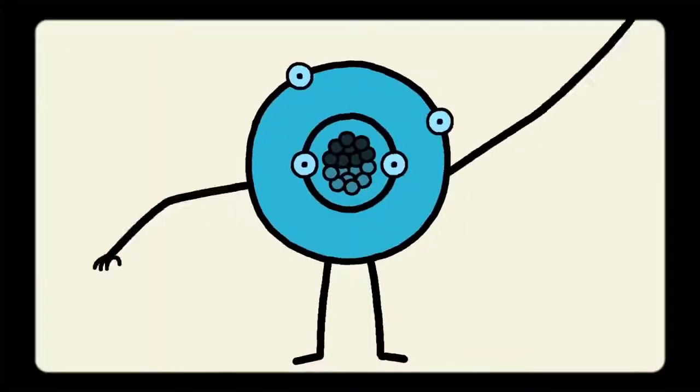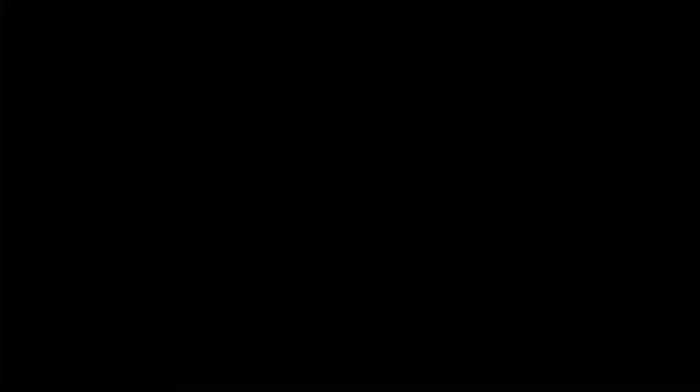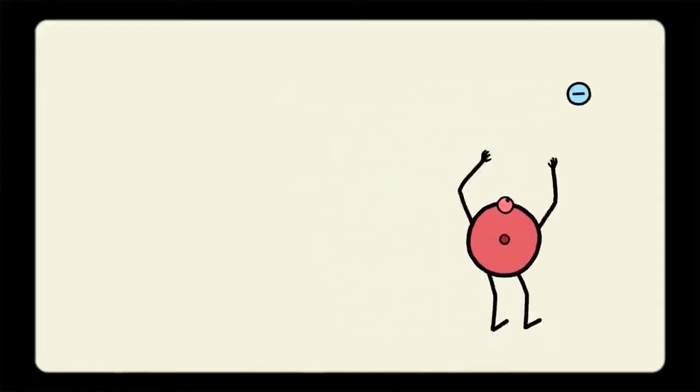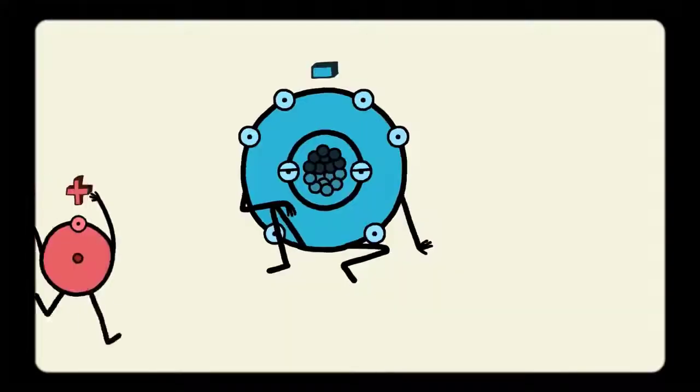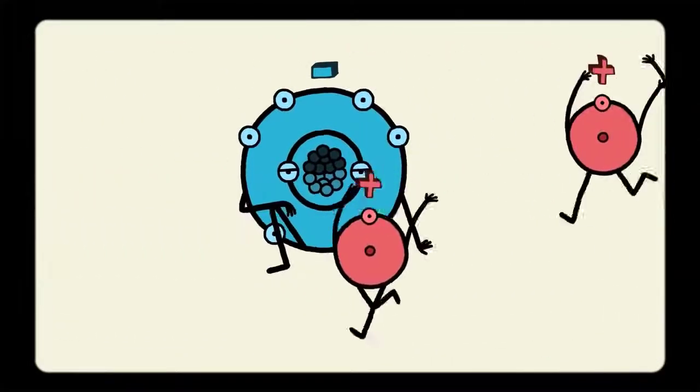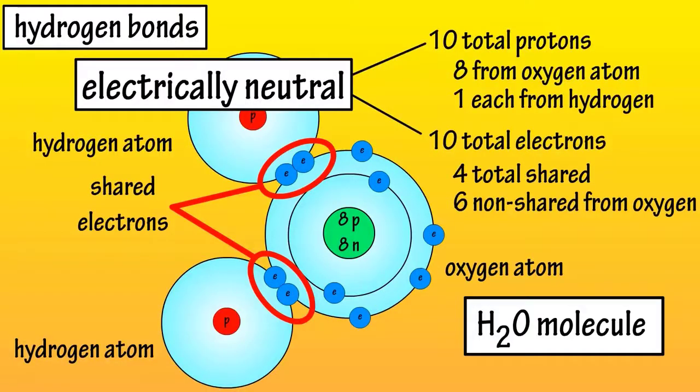So, oxygen is able to attract more than its fair share of electrons. Because hydrogen is smaller and has less strength or fewer protons, it loses the tug-of-war and attracts fewer than its fair share of electrons. So, the oxygen in water behaves as though it's negative, and the hydrogens behave as though they're positive. It has a partial positive side, the hydrogen side, and a partial negative side, the oxygen side of the molecule.